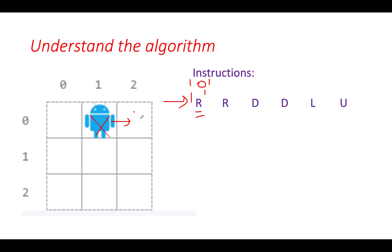The robot moves right to the next cell, then the next instruction is again R. The robot moves right again and goes out of the grid. Therefore, the robot was only able to successfully execute one instruction, so the answer corresponding to index 0 is 1.